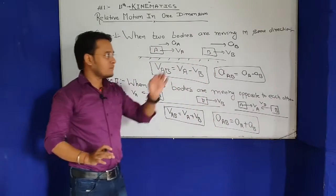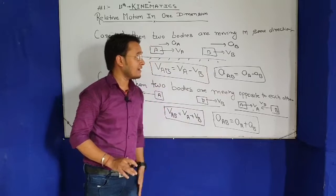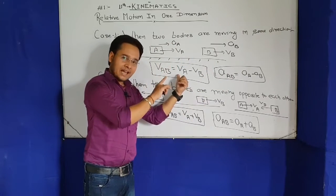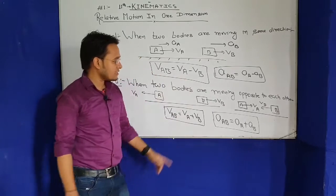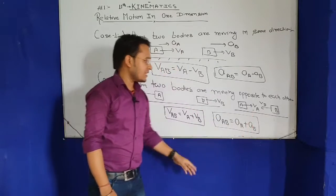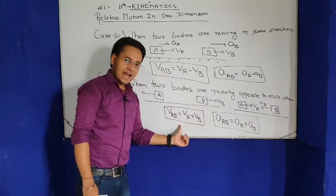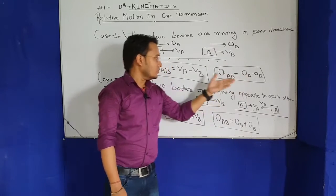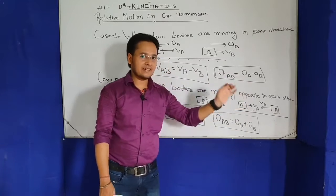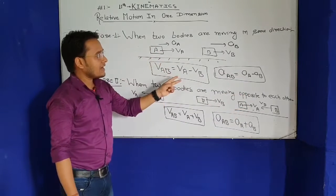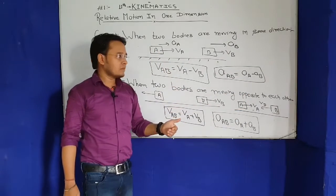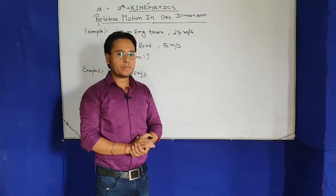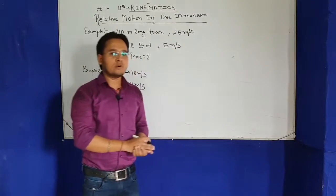So two points to keep in mind throughout this lecture: when bodies move in the same direction, subtract their velocities to get the relative velocity. When bodies move in opposite directions, add their velocities to get the relative velocity. The concept for acceleration is the same. Just keep these two points.